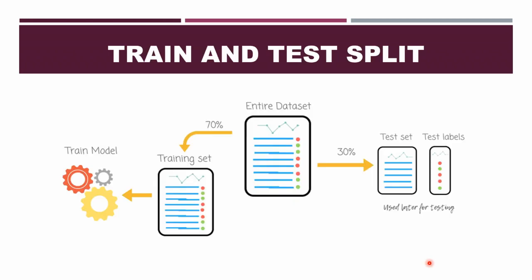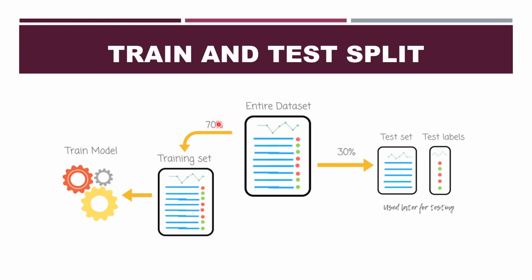Now we will see this in an effective manner with lots of data using Python and Jupyter notebook. I will be dividing my data into two parts: the training dataset and the testing dataset. I will train my model with 70% of the training data available and later test it using the remaining 30% data to see how well it is doing, what my loss is, and so on. Let's go to Jupyter notebook next.